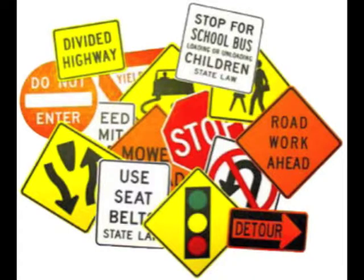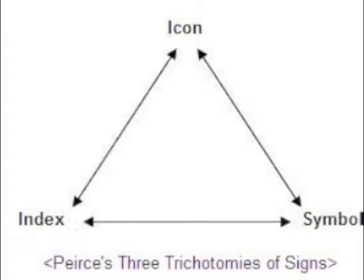Signs are all around us in the world today. This is where Pierce's idea comes into play. Pierce stated that semiotics distinguishes between three types of signs: iconic signs, index signs, and symbolic signs. He also stated that whether a sign belongs to one category or another depends upon the relationship between the sign itself.